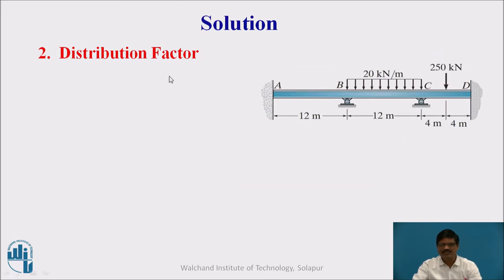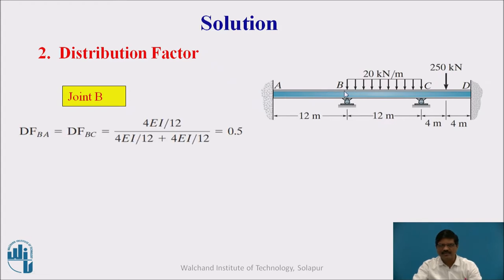Next we calculate the distribution factors at joints B and C. The distribution factor is the ratio of the stiffness of the member divided by the stiffness of that joint. At joint B we have two members, BA and BC. The distribution factors DFBA and DFBC are each equal to the stiffness of that member divided by the total stiffness of the joint, and each works out to be 0.5.